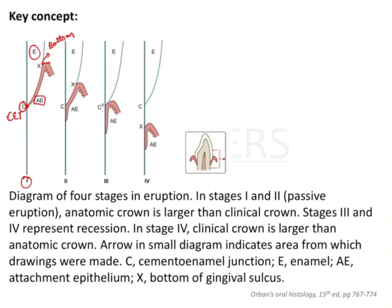How is Stage 2 different from Stage 1? In Stage 1, the bottom of the gingival sulcus is on the enamel only. In Stage 2, the bottom of the gingival sulcus is still on the enamel, but the apical end of the attached epithelium has receded down below the CEJ. So you still see only enamel in the clinical crown, but the apical part of the attachment epithelium has come apical to the CEJ, making it Stage 2. Both Stage 1 and Stage 2 fall under passive eruption.